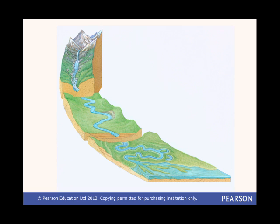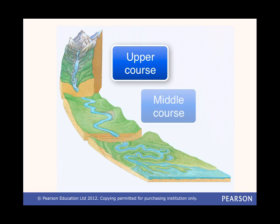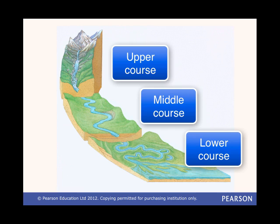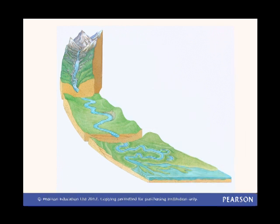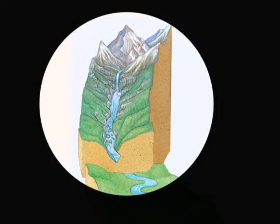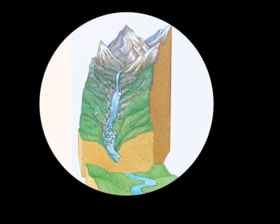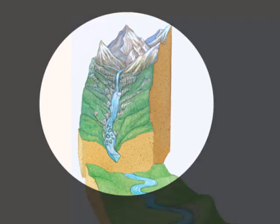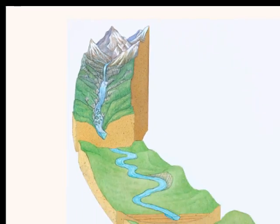The river system is divided into three main parts: the upper course, the middle course and the lower course. The start of the river is in the upper course, this is called the source of the river. The upper course is steep and a long way above sea level and the river has lots of energy for erosion.